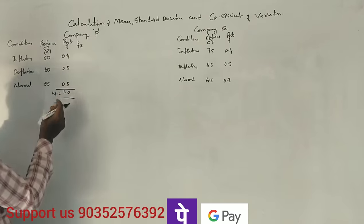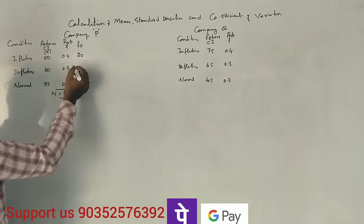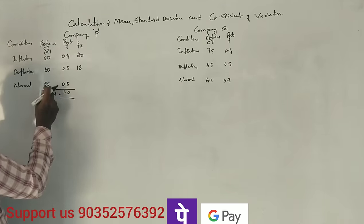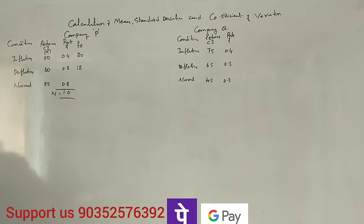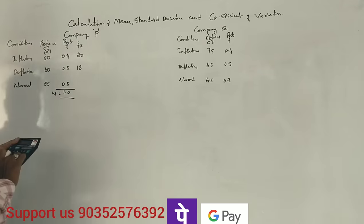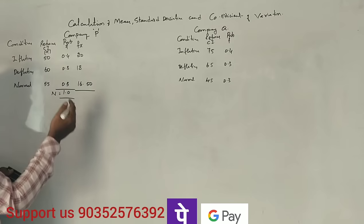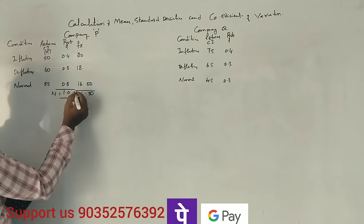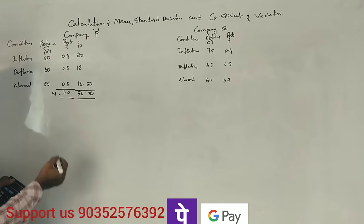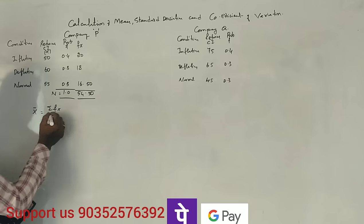Now we calculate f into x: 50 into 0.4 equals 20; 60 into 0.3 equals 18; 55 into 0.3 equals 16.5. The total summation of fx comes to 54.5.